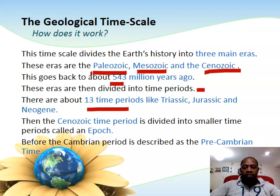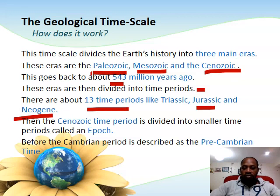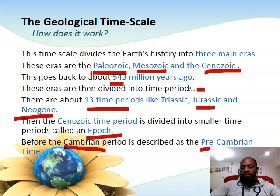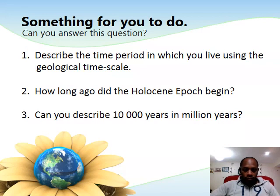The Cenozoic time is divided into small time periods called Epochs. For example, the Holocene Epoch is where humans actually started evolving. The period before the Cambrian period is called the Precambrian — 'Pre' simply means 'before,' so the Precambrian is what comes before the Cambrian period. We'll move forward from there in the next section.